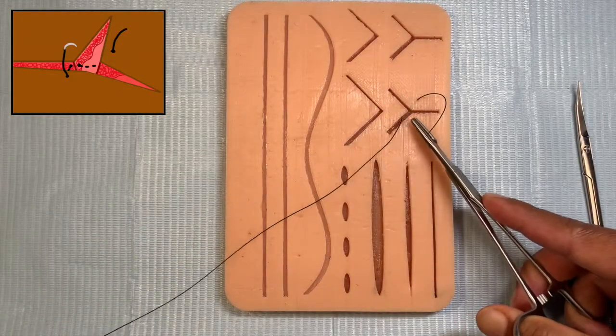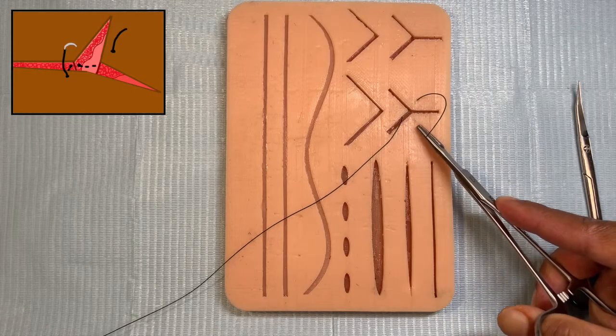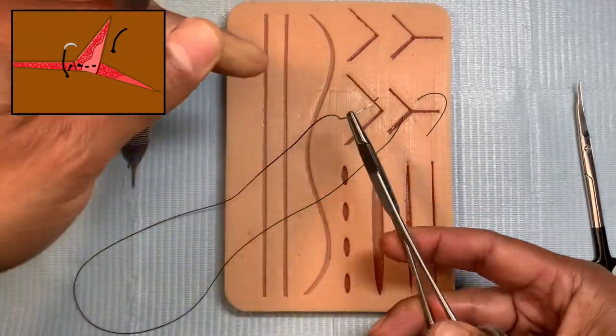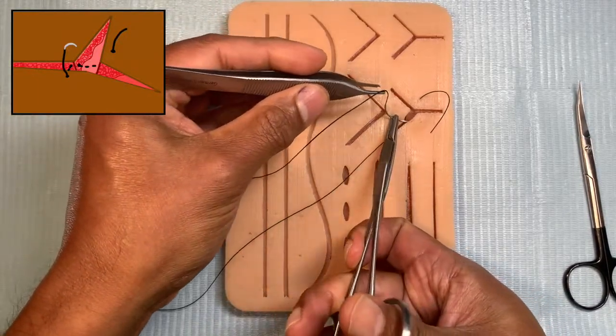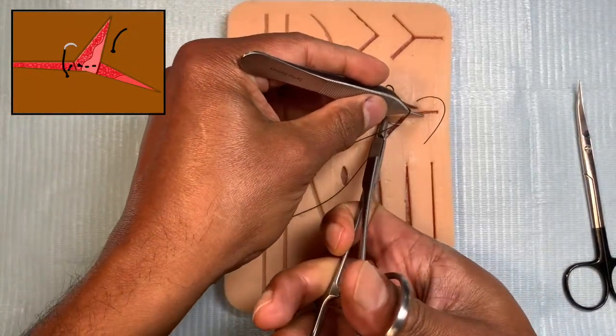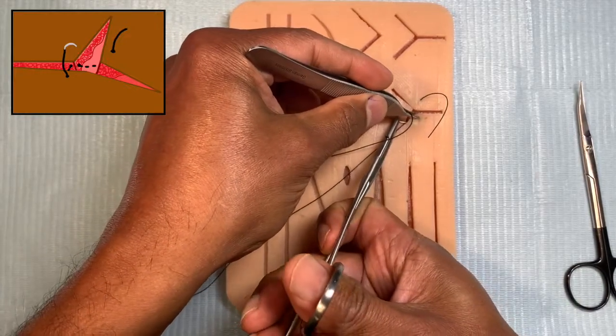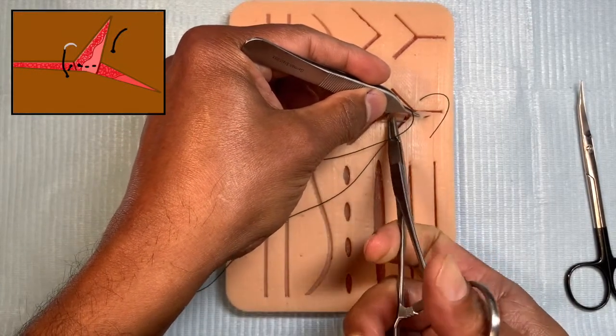Once you've done that, then you've got to bring it out here in a reverse triangle situation as we just discussed. So you reverse your needle and then you're going to bring it out this way, slightly further away from the wound. So you bring it through that.